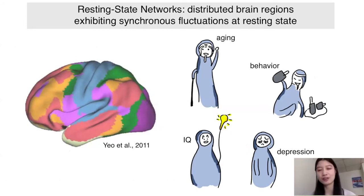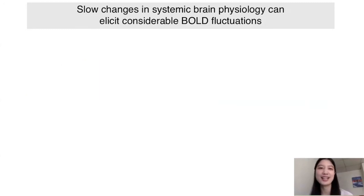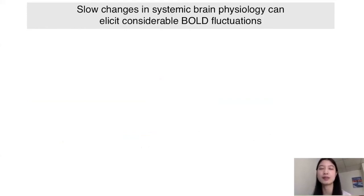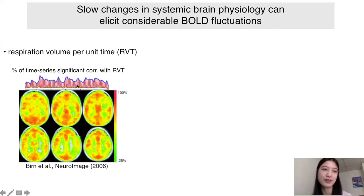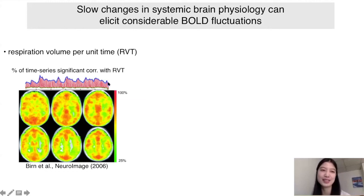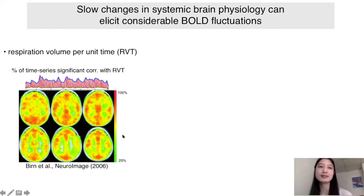Multiple resting state networks have been identified. Researchers found that functional connectivity can relate to aging, behavior, IQ, and sometimes depression or other psychiatric or neurodegenerative disorders, making it a very popular tool to seek cognitive or clinical biomarkers. However, there is always a concern about potential physiological confounds in fMRI measurements. Slow changes in systemic physiology can cause considerable BOLD fluctuations.